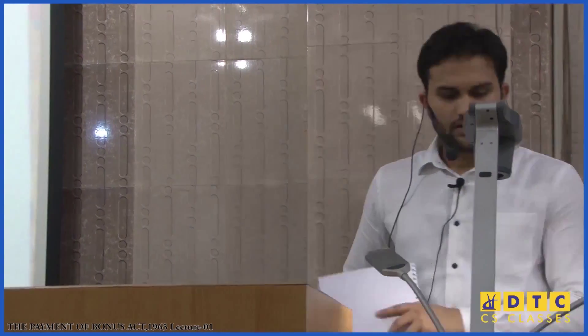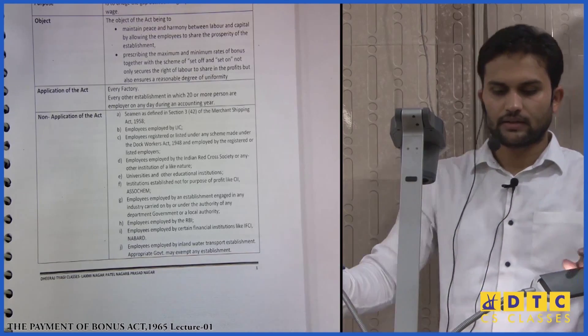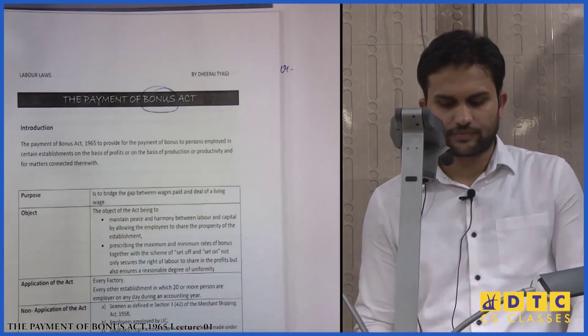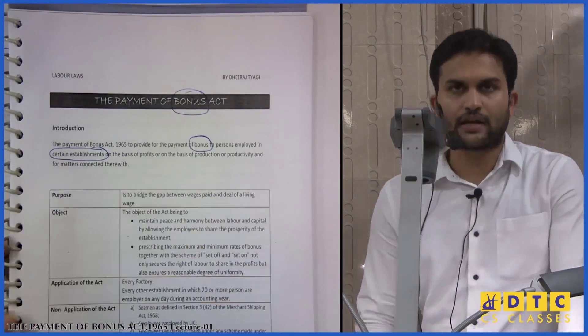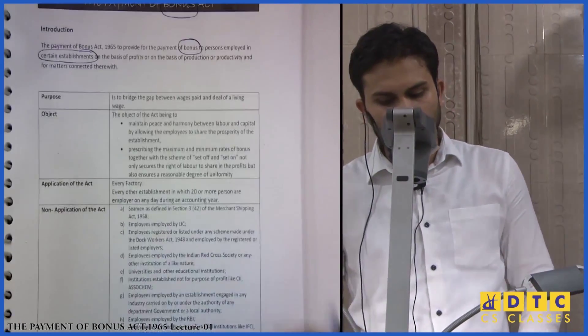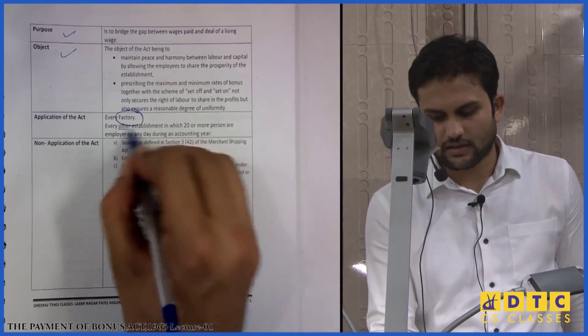Regarding the applicabilities of this act — certain conditions come before us. Let's open your chapter, the Payment of Bonus Act 1965, page number 1. As per the act, it provides bonuses to certain establishments. Its applicability covers all factories and any establishment with 20 or more workers. Now let's see the specific cases where the act does not apply.